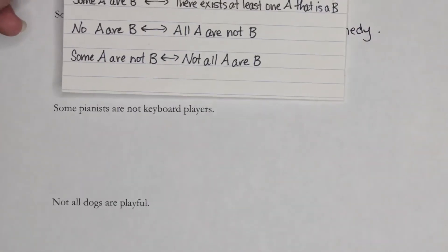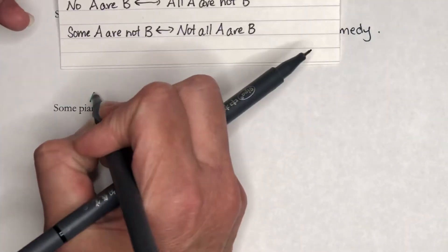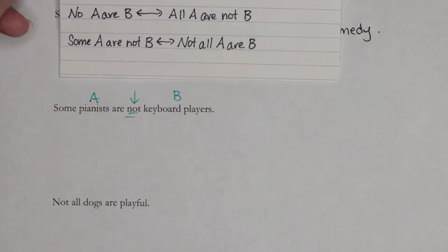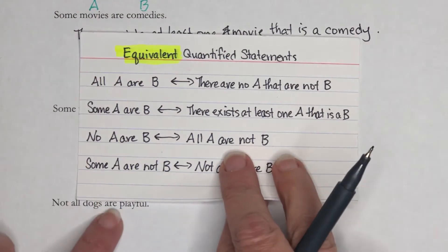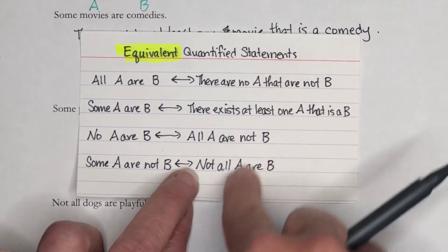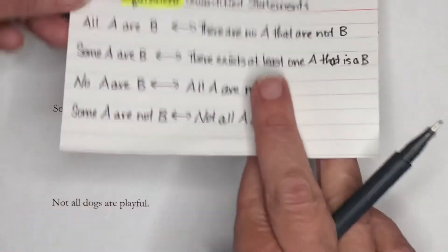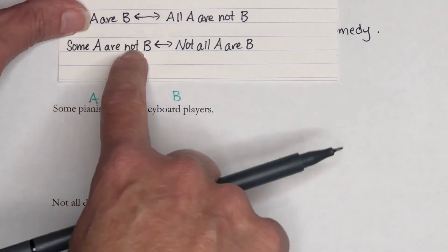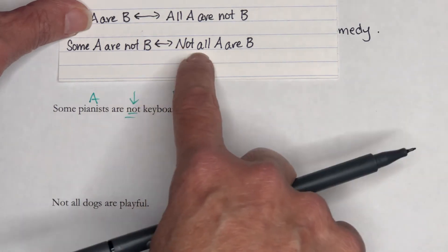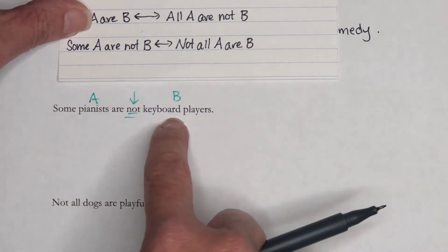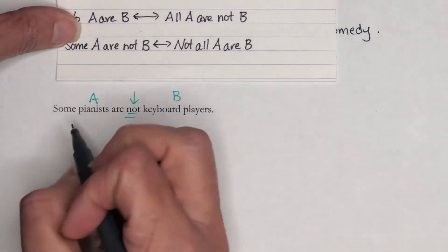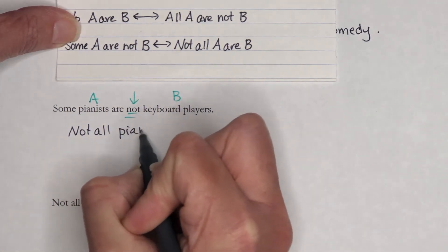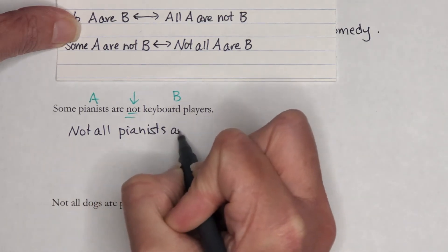Some pianists are not keyboard players — the pattern is: Some A are not B. Note that keyword 'not.' Now, you're not always going to start on the left side; sometimes you might start somewhere else and want to end up on the other side. The equivalent of 'Some A are not B' is: not all A are B. So: not all pianists are keyboard players.